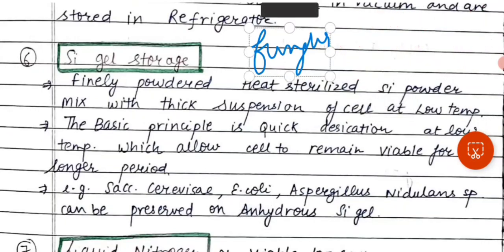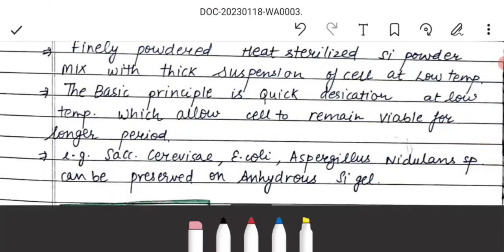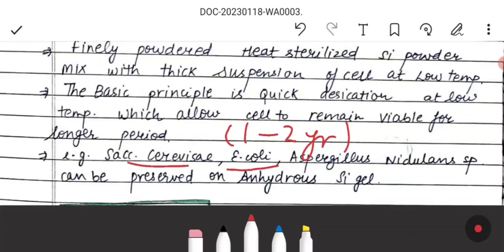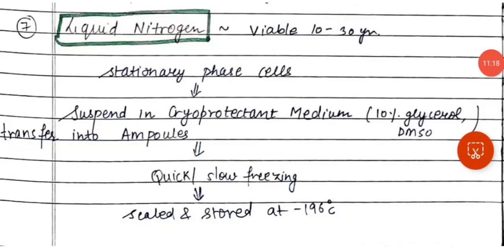The next preservation technique is silica gel storage. Silica gel can be used to preserve both bacteria and fungi. Finely powdered, heat-sterilized silica gel powder is mixed with a thick suspension of the microbial cells at low temperature. The basic principle is quick desiccation at low temperature, which allows the cells to remain viable for a longer period of 1 to 2 years. Organisms like Saccharomyces cerevisiae, E. coli, and Aspergillus can be preserved using silica gel storage.